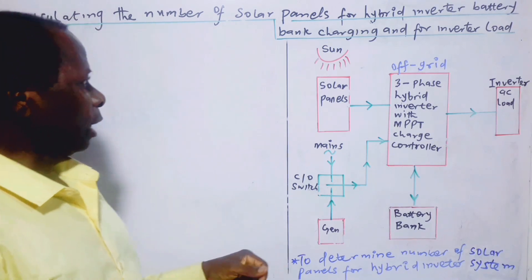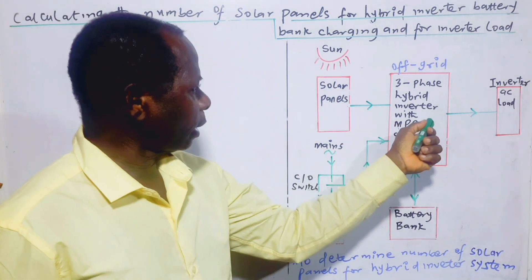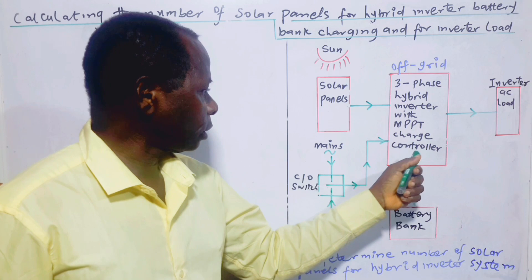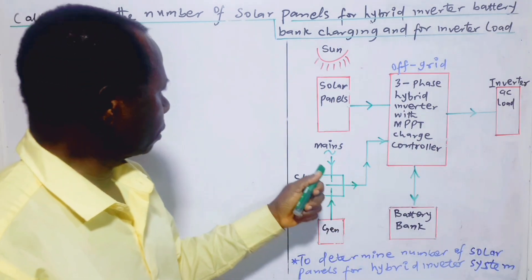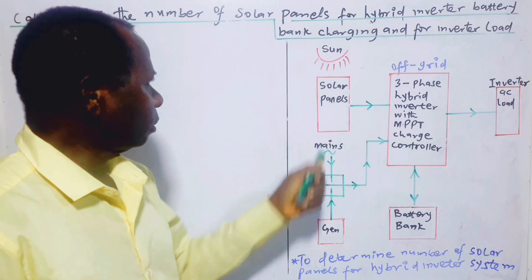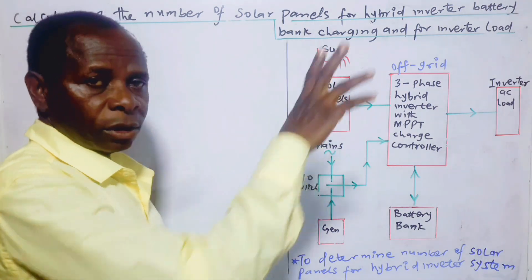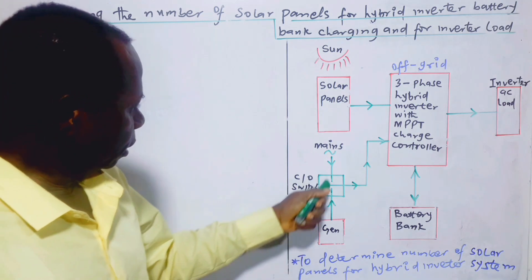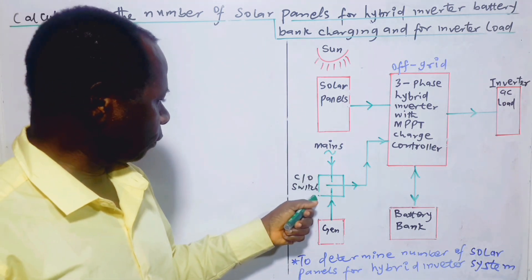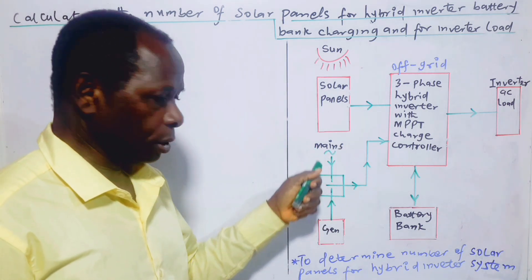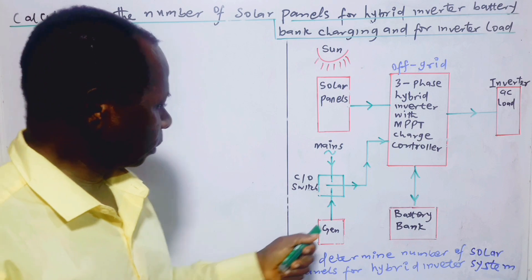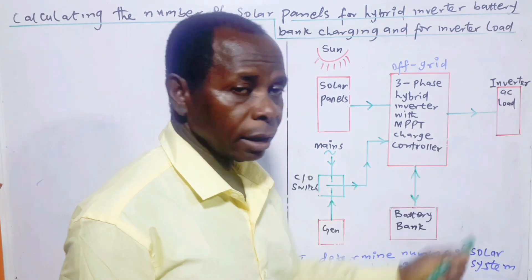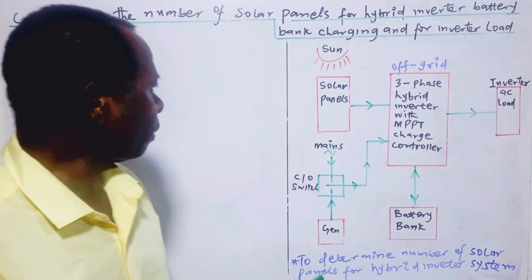What we have here is a three-phase hybrid inverter with an MPPT charge controller. We have solar panels with the sun shining on them, a generator and the mains, a changeover switch to select mains or generator, a battery bank, and the inverter AC load — that is, alternating current load.